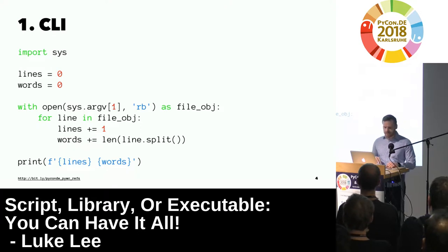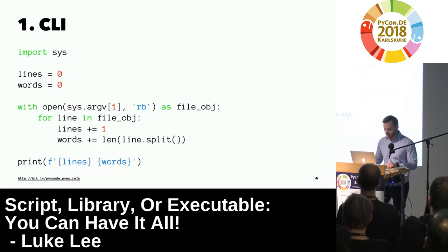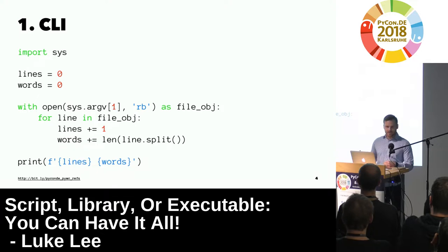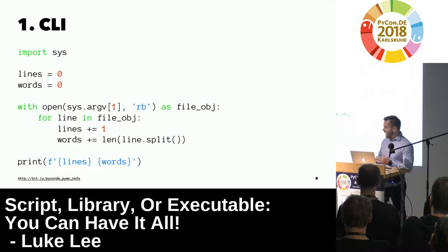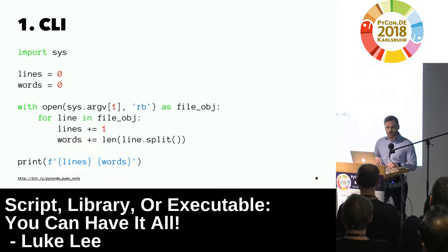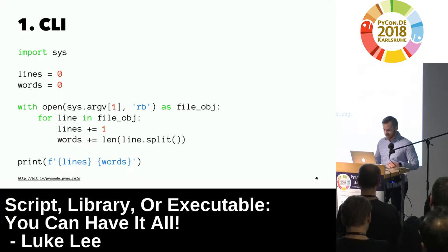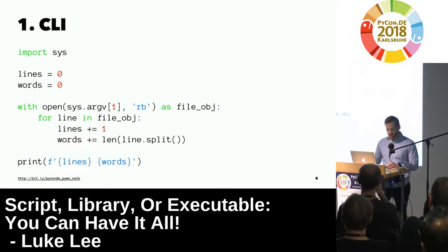There are a couple of things missing from this simple version. For this one-off case it's probably fine, but there's no help, the code isn't very extensible, and the argument parsing and real work are mingled together. That also makes it more difficult for other developers to reuse that code later. The other caveat is that it requires Python, so if you have a user on Windows, you might have to have that awkward conversation about Python 2 versus Python 3.